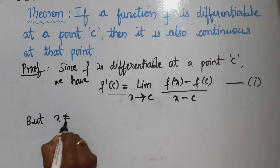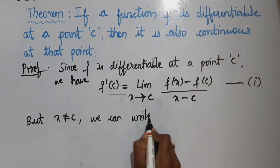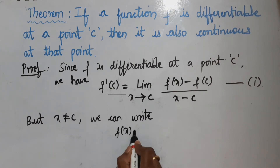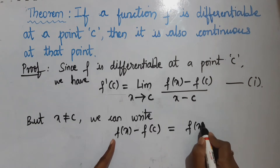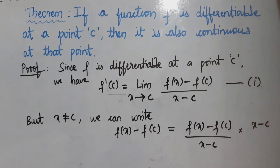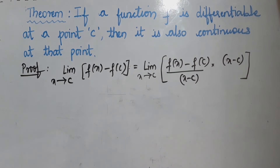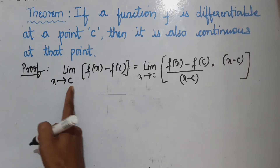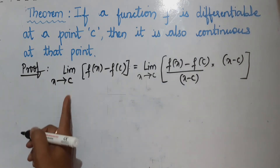When x is not equal to c, we can write f(x) − f(c) as [f(x) − f(c)] divided by [x − c], multiplied by [x − c]. So I have multiplied and divided by (x − c). The next step: I will apply the limit on both sides as x tends to c. After applying the limit, I have: limit of [f(x) − f(c)] as x tends to c equals limit of [f(x) − f(c)] divided by [x − c] times [x − c] as x tends to c.